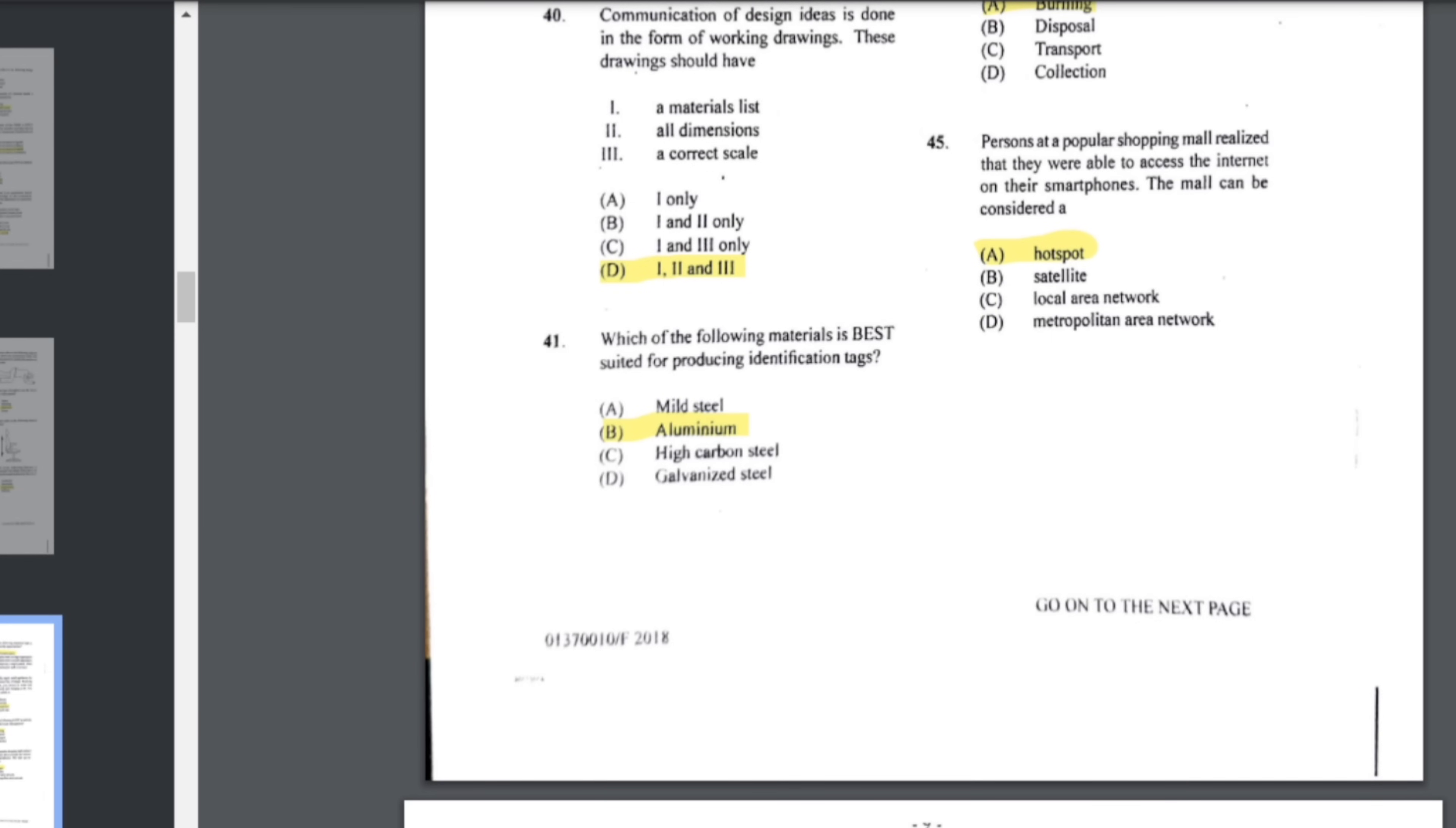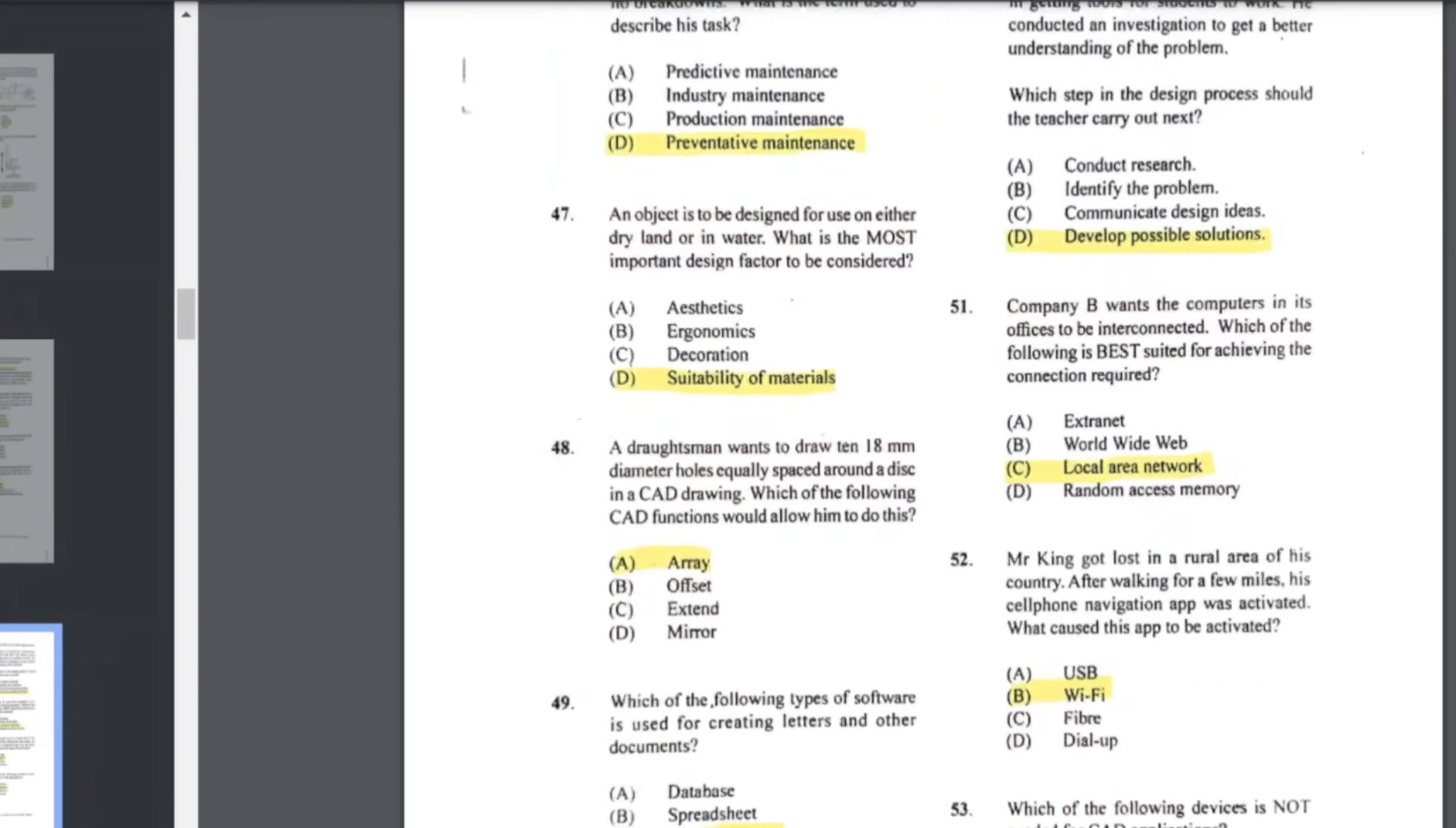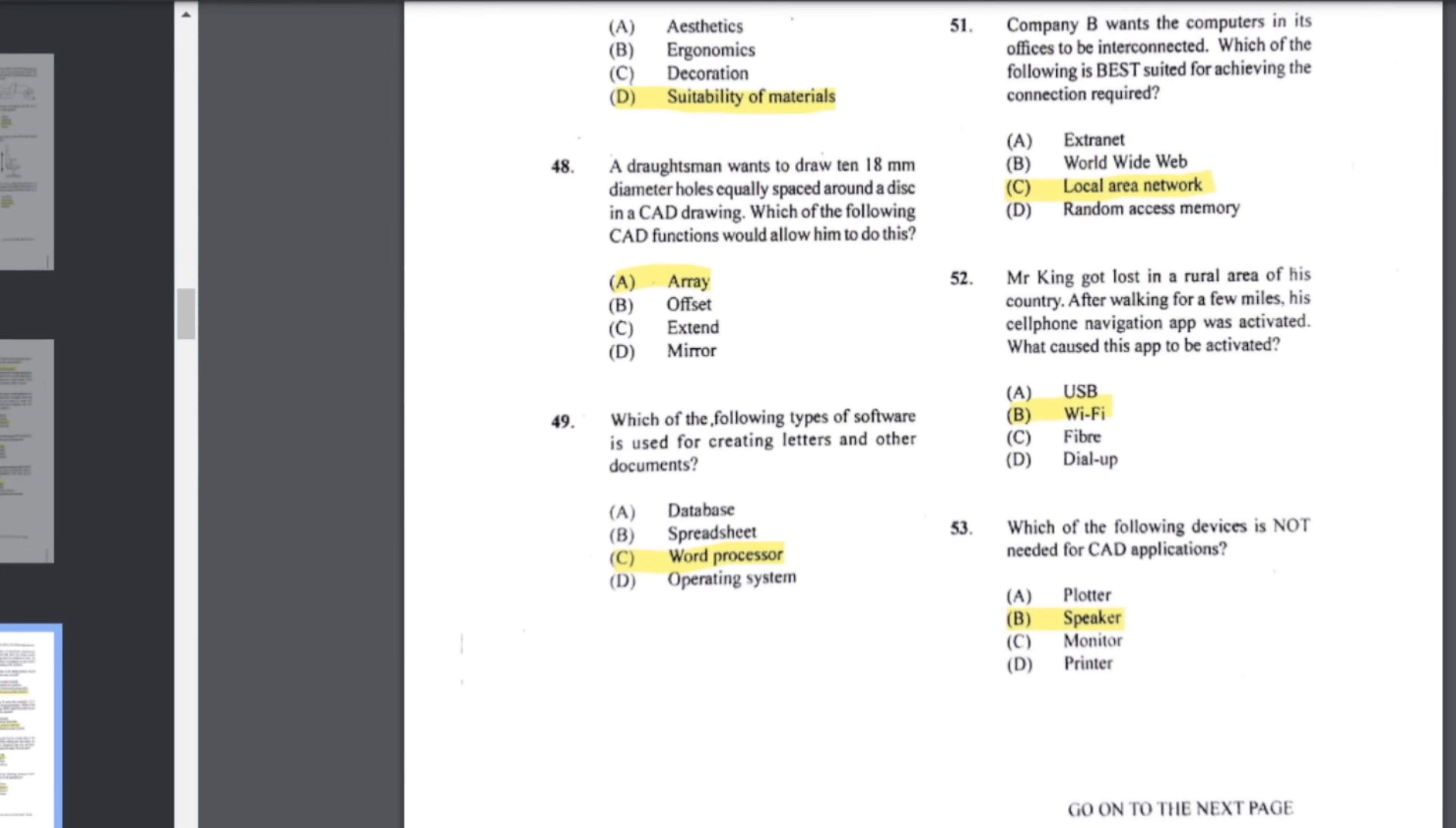Number 44: which of the following is not an activity of sustainable management? Burning. Number 45: persons at a popular shopping mall realized that they were able to access the internet on their smartphones. The mall can be considered a hotspot. Number 46: a workshop attendant was given the responsibility of conducting checks on all machines in a machine shop every Tuesday and Friday to ensure there are no breakdowns. What is the term used to describe this task? That would be preventative maintenance. Number 47: an object is to be designed for use on either dry land or in water. What is the most important design factor to be considered? The suitability of materials - materials that can work on both land and water.